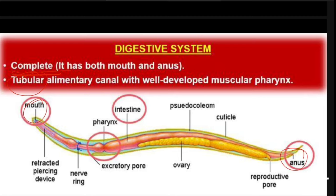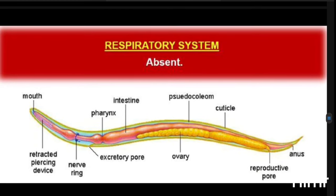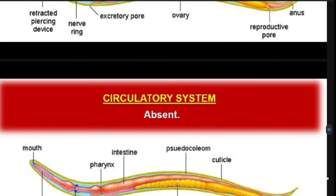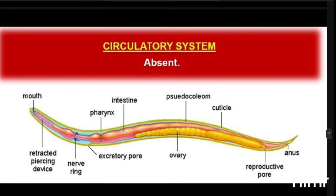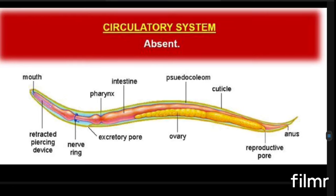Regarding the respiratory system, they do not have any respiratory system — it is entirely absent in Aschelminthes. The circulatory system is also absent. So while they have a well-developed digestive system, the circulatory system and respiratory system are both absent in Aschelminthes.